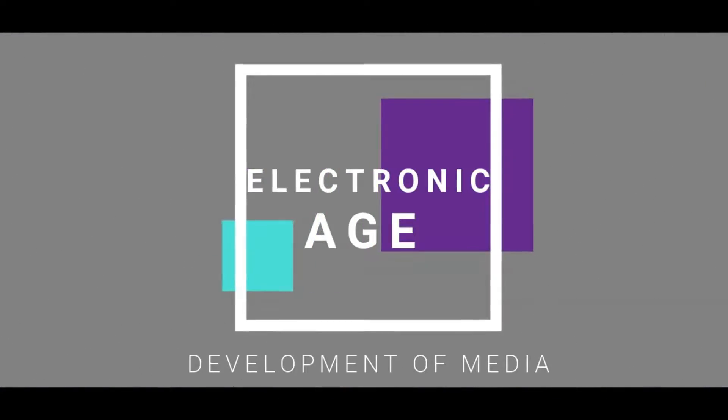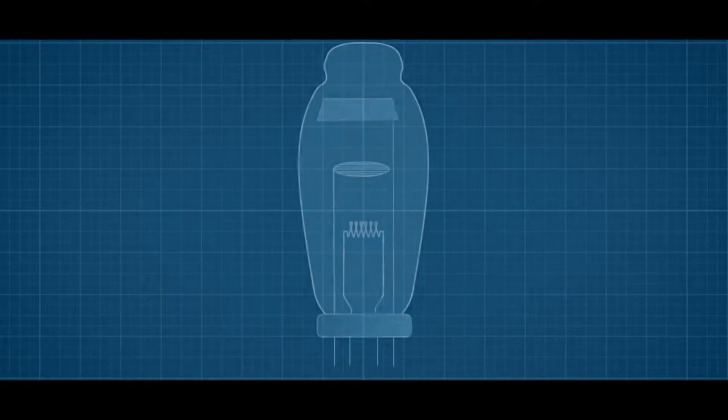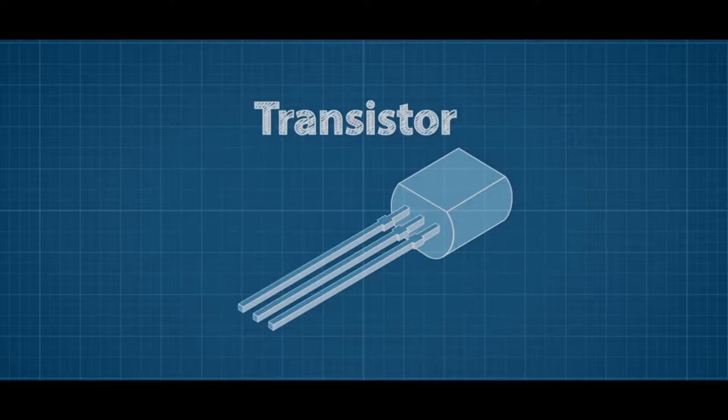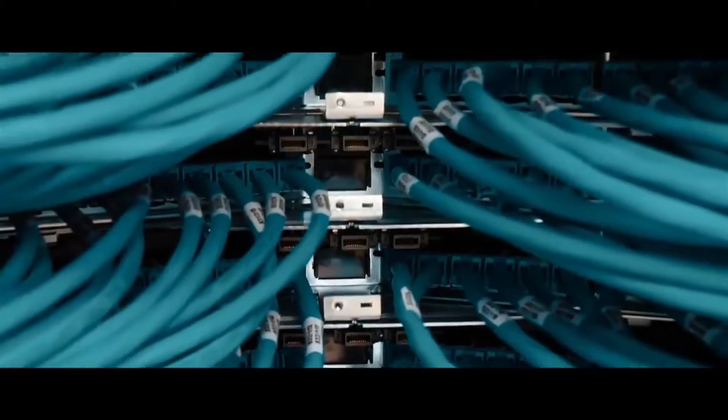After that, the electronic age came. During this age, the number system was created, which represents numbers with every value saved into computer memory. The transistor was another invention of this age — a semiconductor device used to amplify or switch electronic signals and electrical power. It also worked as an on-and-off switch for any device.